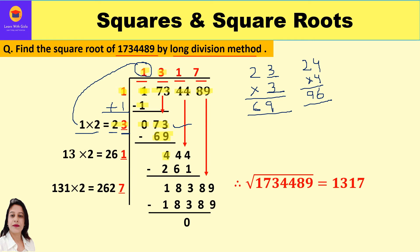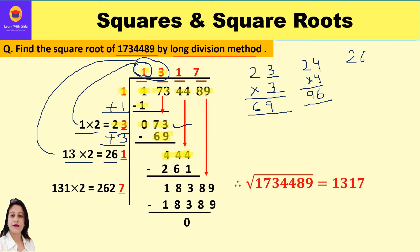Subtracting 69 from 73 gives 4. Bring down the next period 44, making the new dividend 444. The current quotient is 13. Double 13 to get 26 — alternatively, just add the last quotient digit 3 to get 26. Leave a blank to the right of 26.